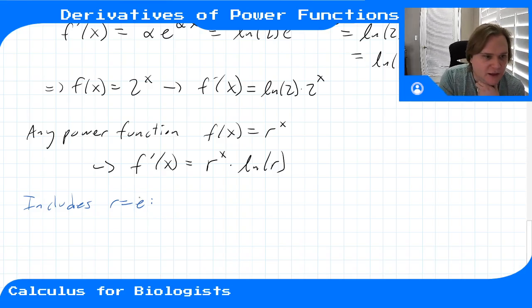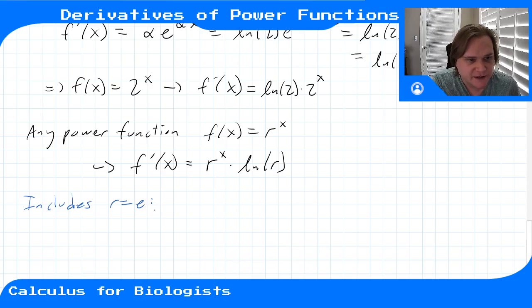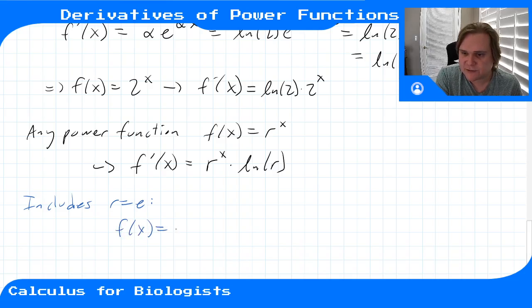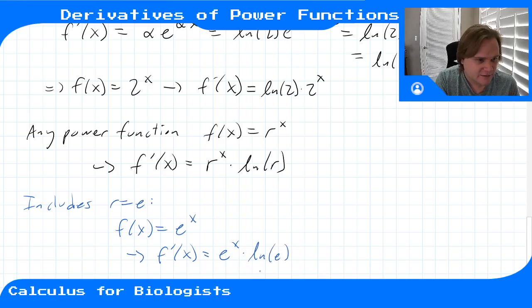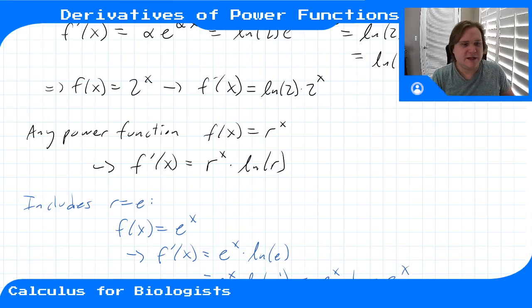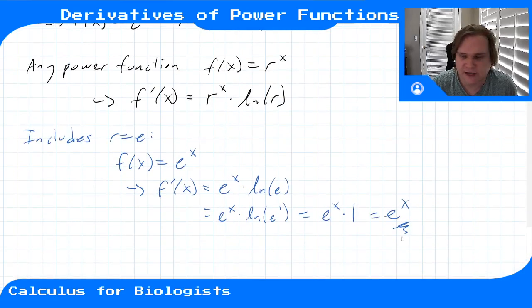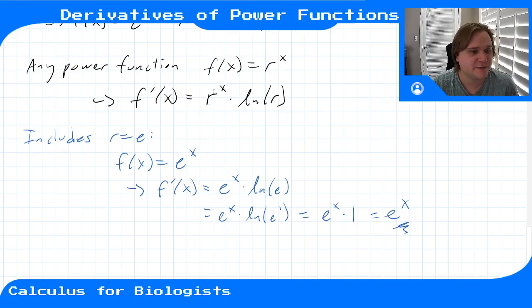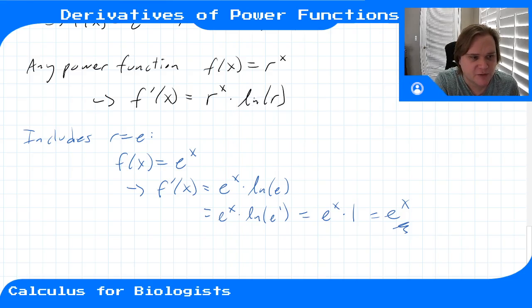This includes the case r = e, which is special. For f(x) = e^x, the derivative by this rule is e^x·ln(e), and since ln(e) = 1, that's just e^x·1 = e^x. So e^x is the special function whose derivative is exactly itself. For other power functions with base r, the derivative is r^x times ln(r) — you still have that r^x term, multiplied by the natural log of r, which comes from making the exponential substitution and applying the chain rule.